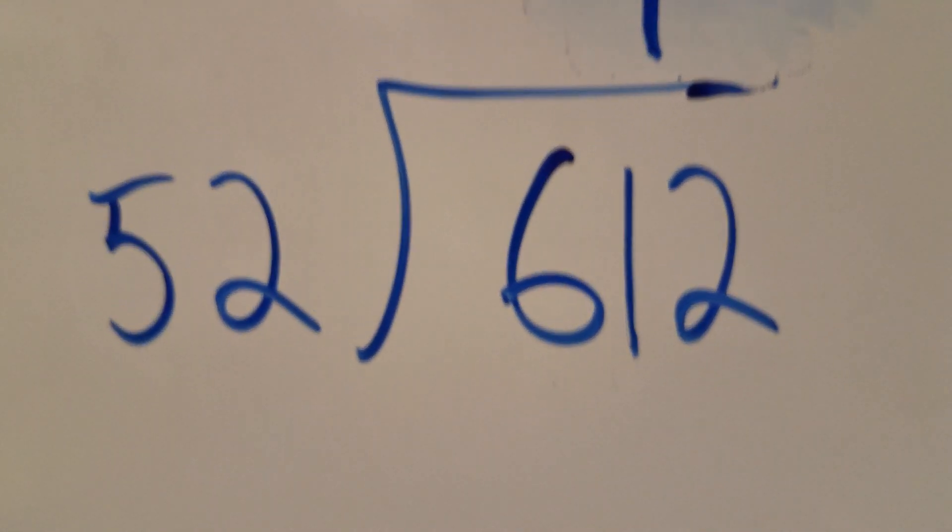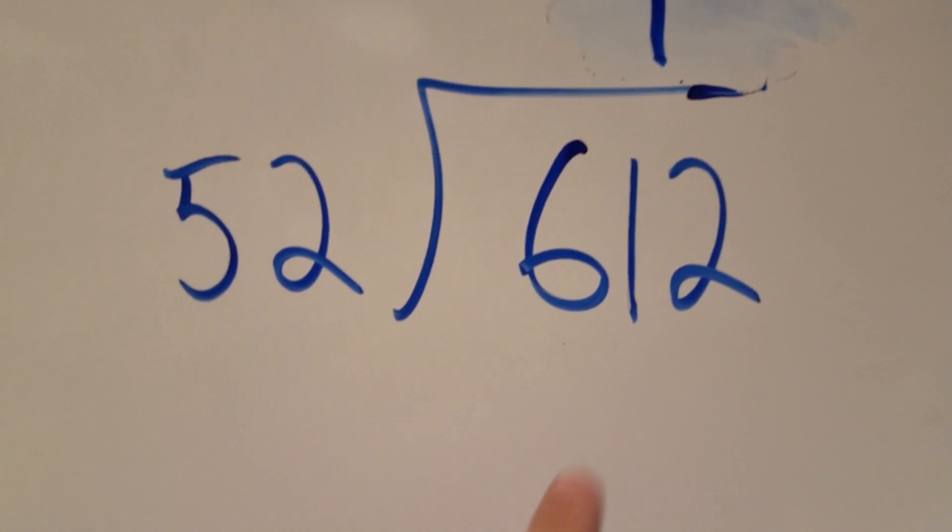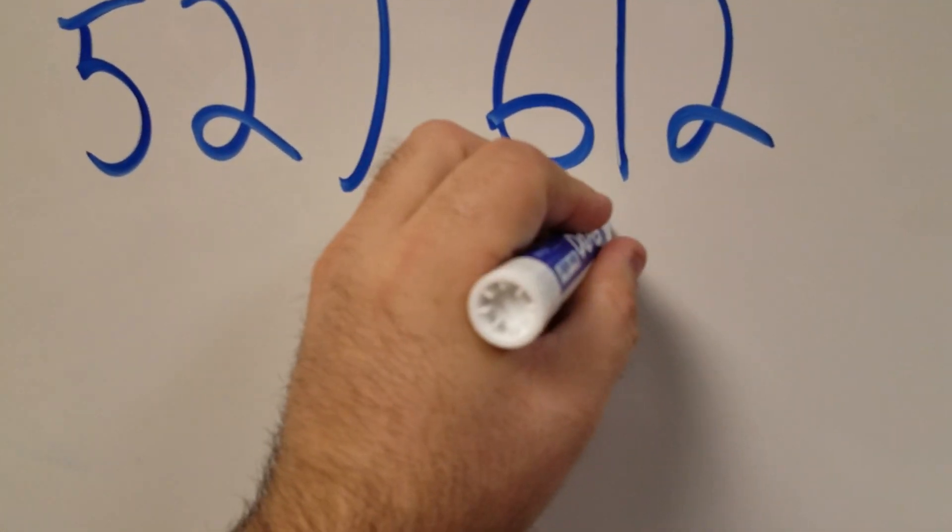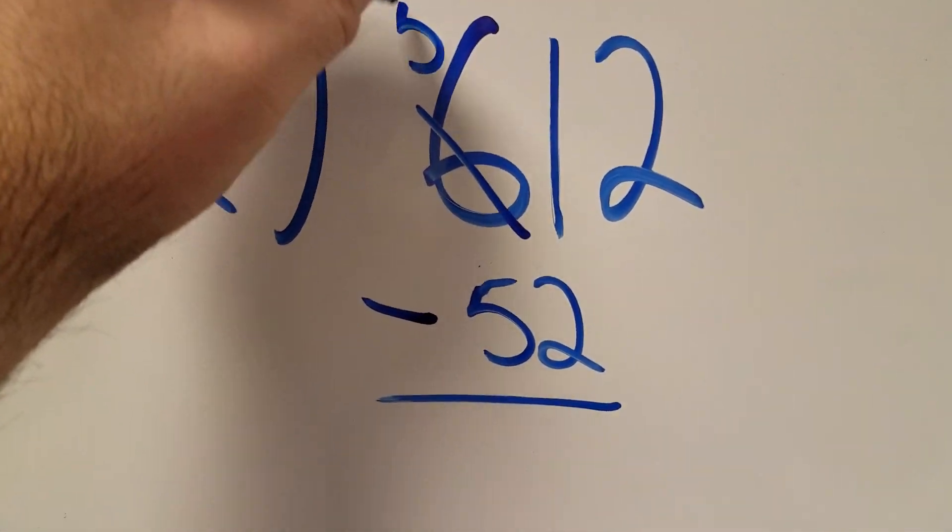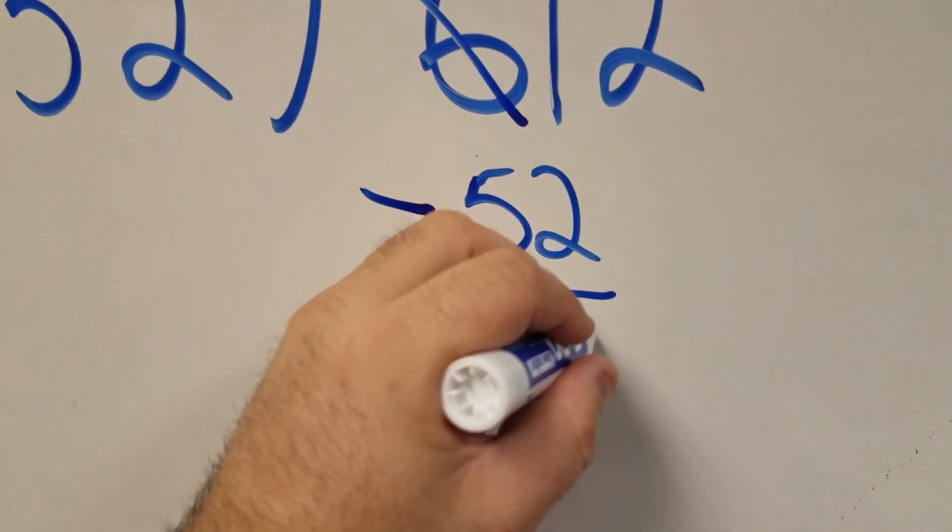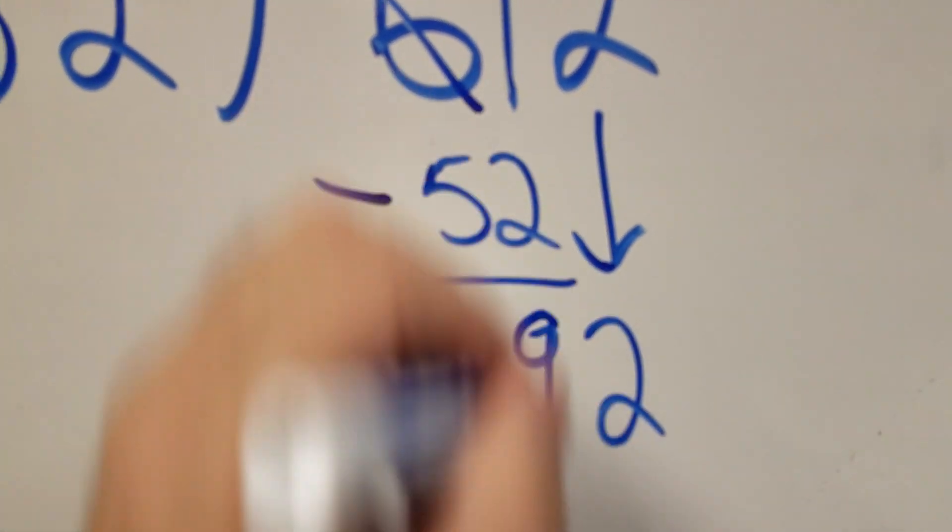I know 52 times 1 works. I can do that one time, so I'm going to go ahead and subtract 52 from here. Don't forget to borrow or regroup, and I got 92 because I have to bring down that 2.